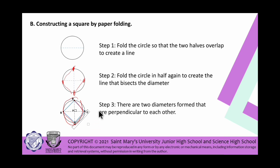As you have observed, this square is formed by connecting points B, C, D, and E. It is both equilangular and equilateral.